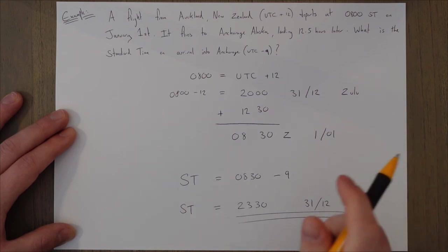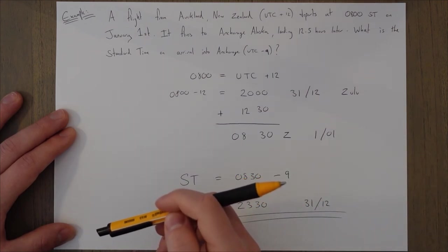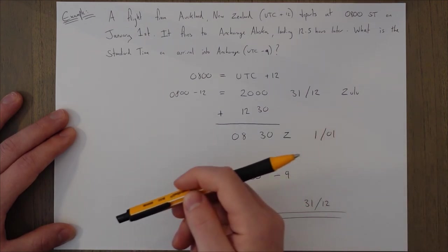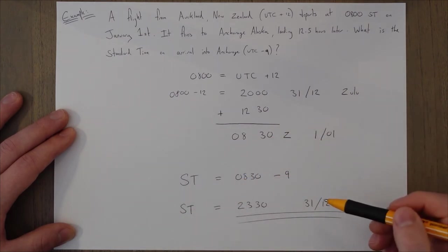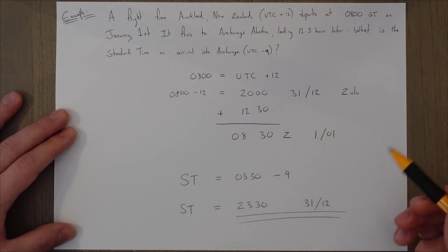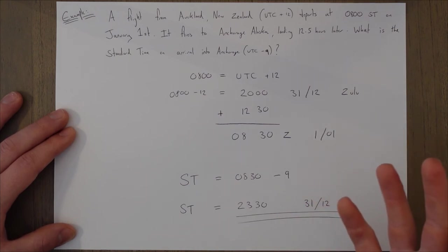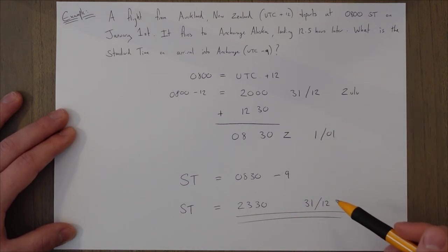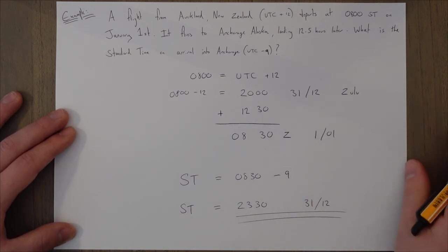So the standard time is going to be 23:30 and we're back again on the 31st of December. So as an error check we can say that we flew over the dateline to the east, therefore we decrease the day by one date. So we've done that. And we've essentially flown back in time. We've flown back into last year. So a pretty handy trick.